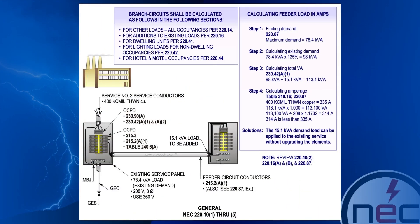A revision has been made to clarify and correlate with actions taken during the first revision stage. Loads necessary for branch circuit calculations are included in the new list items under 220.10 General. The code making panel's action during the first draft relocated multiple sections to Part 3, Feeder and Service Load Calculations. While those relocated requirements do apply when calculating feeder and service load calculations, they are also applied when calculating branch circuit loads. Rather than repeat requirements in both parts 2 and 3, a list is created in section 220.10 that identifies all sections within 220 that apply to branch circuit load calculations.